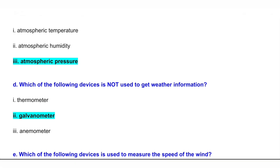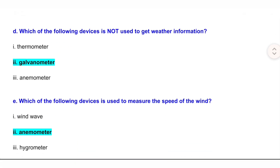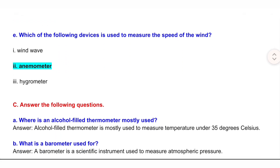D: Which of the following devices is not used to get weather information? Answer: Galvanometer. E: Which of the following devices is used to measure the speed of the wind? Answer: Anemometer.